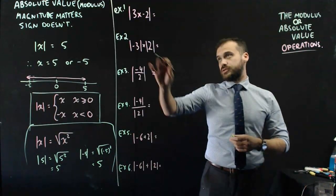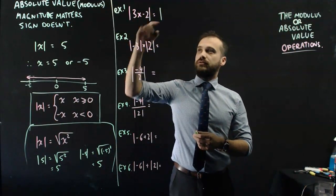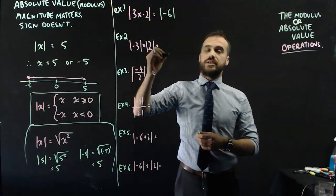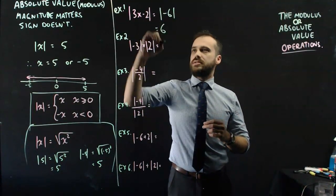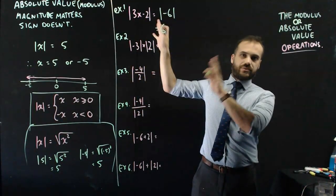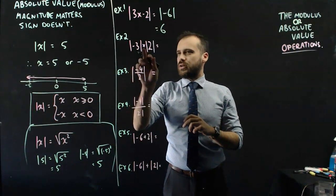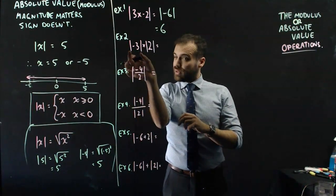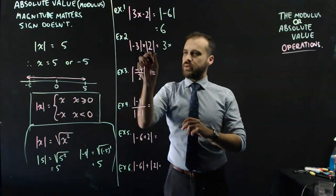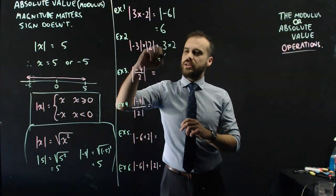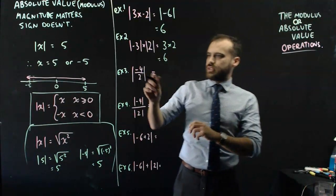Six examples. The absolute value of 3 times negative 2 is equal to the absolute value of negative 6, and the absolute value of negative 6 is 6 — the sign goes away. The absolute value of negative 3 times the absolute value of 2: the absolute value of negative 3 is 3, the sign goes away, times the absolute value of 2, which is just 2, giving an answer of 6.